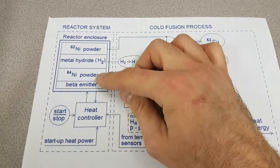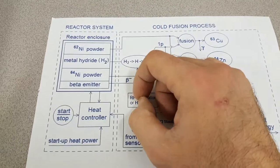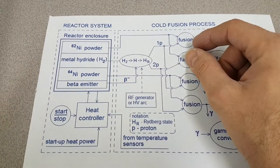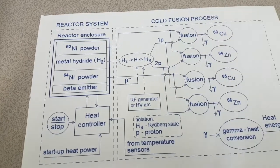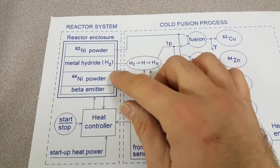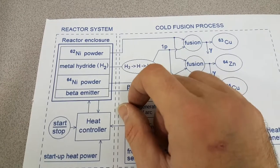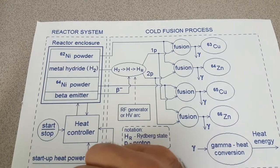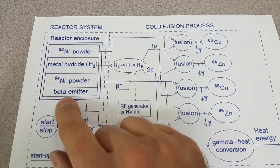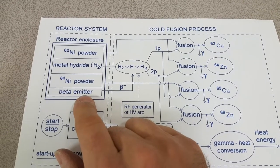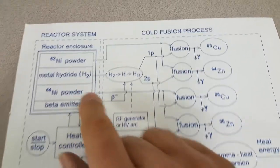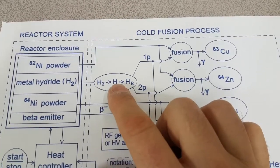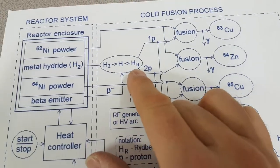So you've got your 62 and 64 nickel isotopes here. These are the very heavy, high mass nickel isotopes. And they are also bisonic. And then the hydride, or in this case he's calling it the metal hydride. And he said absolutely fundamental to the process would be a beta emitter. So what he's saying is that the metal hydride takes the H2, goes to H, and then this goes to the Rydberg state.